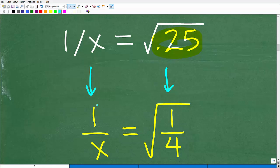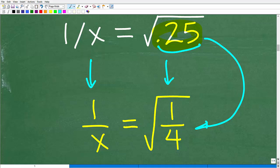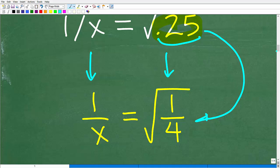But here is the way I'm going to think of this problem. So instead of 1 slash x, I'm going to have 1 over x, is equal to the square root of not 0.25, but I know that this is equal to the fraction 1 over 4. So the square root of 1 over 4. Now, this becomes quite easy when you understand a basic property of square roots.